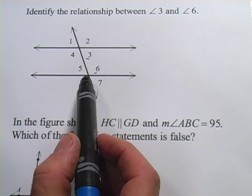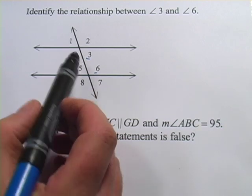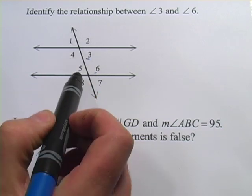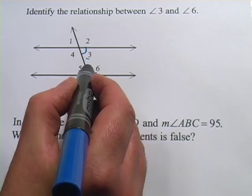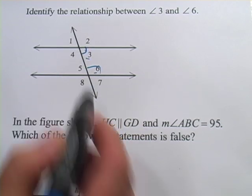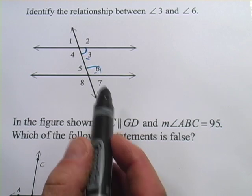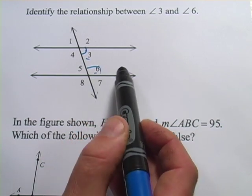In addition, they're supplementary. They're going to add up to 180 degrees. How do I know that? Well, there's only two angle measures in this whole thing. This is one of the smaller ones. This is one of the bigger ones. Small and a big here in this construction add up to 180 degrees. So consecutive interior angles and supplementary.